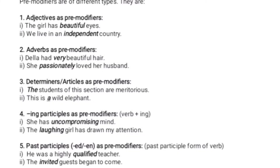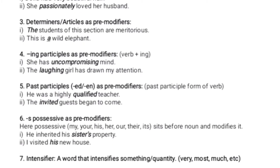The next pre-modifier is past participle — the past participle form of a verb, which students are familiar with as verb three (V3). Past participle is the past participle form of the verb.